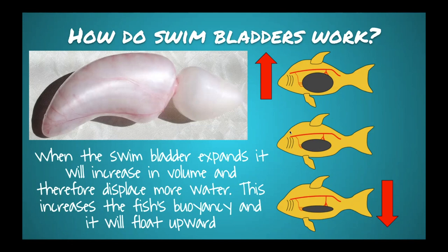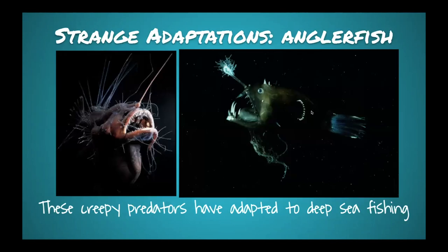Moving on to strange adaptations. The first is the angler fish — super creepy and highly adapted to their deep sea, pitch-black environment. They're called angler fish because they fish for other fish — an angler is a fisherman. They use an antenna that lights up as a lure to draw in prey, just like how people use lures to catch fish. If you've seen Finding Nemo, you know what I'm talking about.